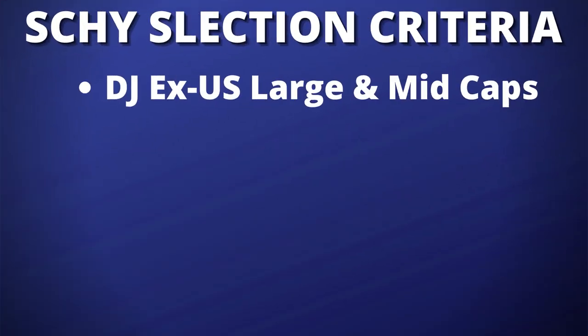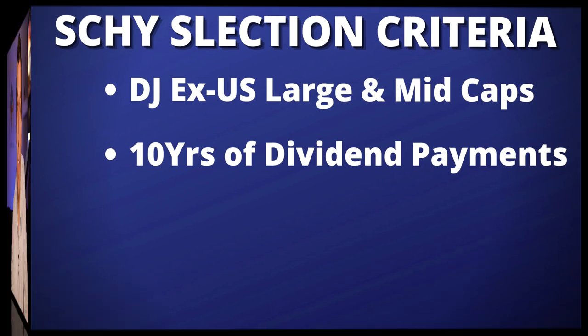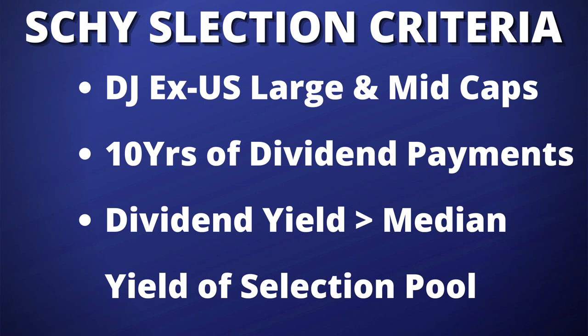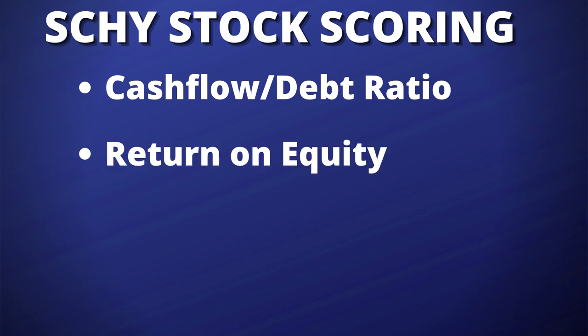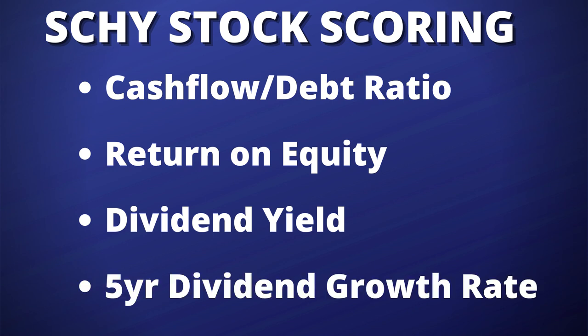The selection criteria for stocks in the SCHY ETF begins with the Dow Jones XUS large cap and mid cap indexes — XUS meaning non-US companies. Being a dividend ETF, SCHY then looks for at least 10 consecutive years of dividend payments. From the remaining stocks, Charles Schwab looks at the median dividend yield of that group and only considers companies with a yield above that median. The remaining pool is then scored equally on four metrics: cash flow compared to total debt, return on equity, dividend yield, and five-year dividend growth rate.